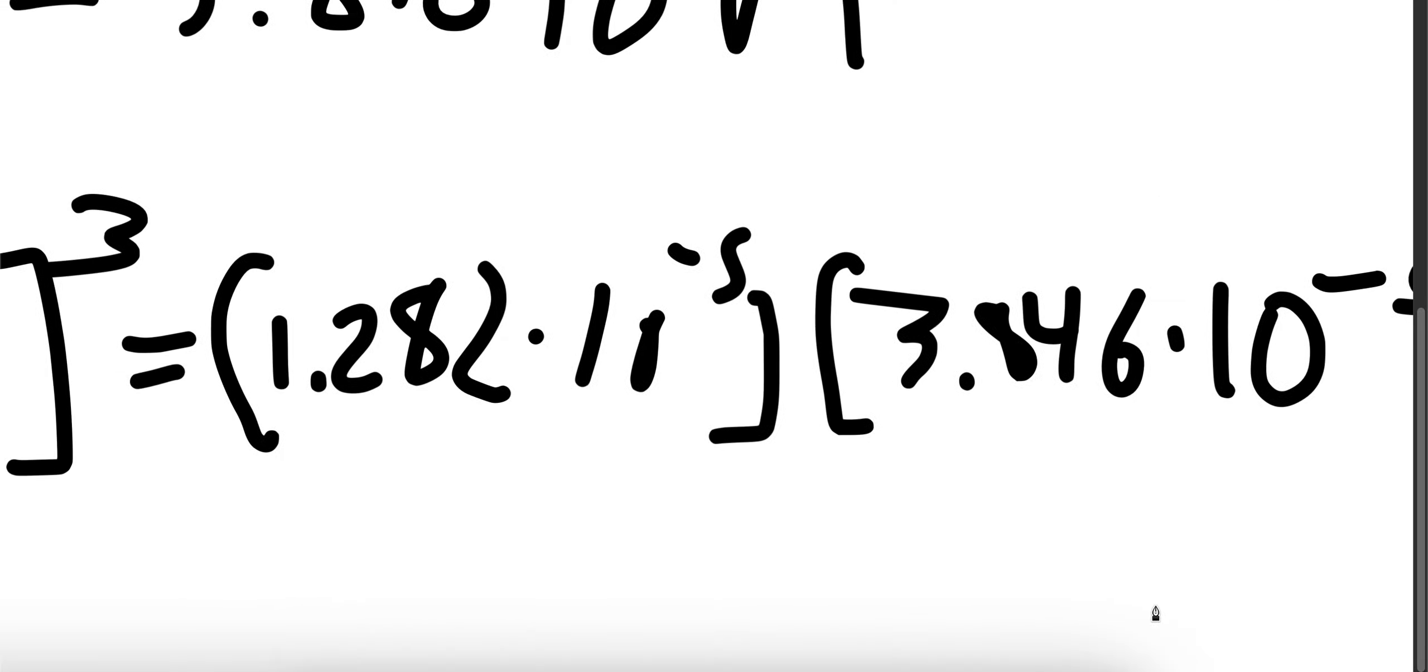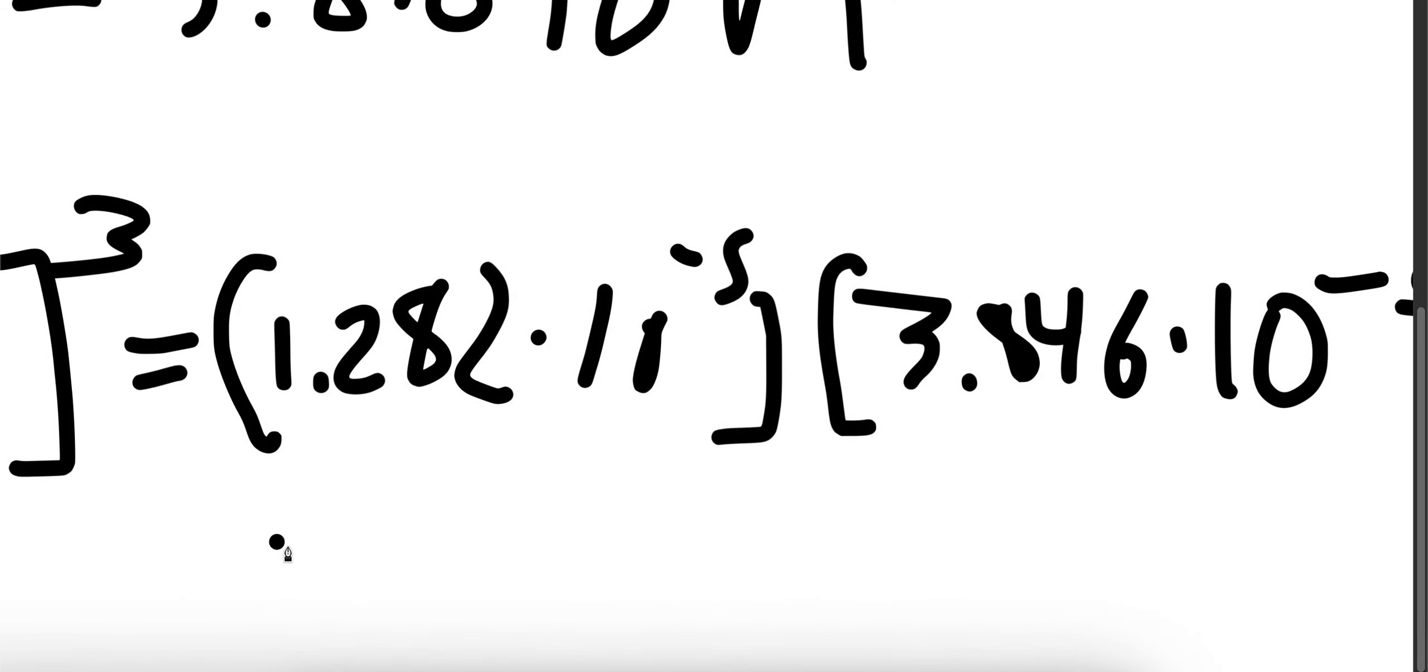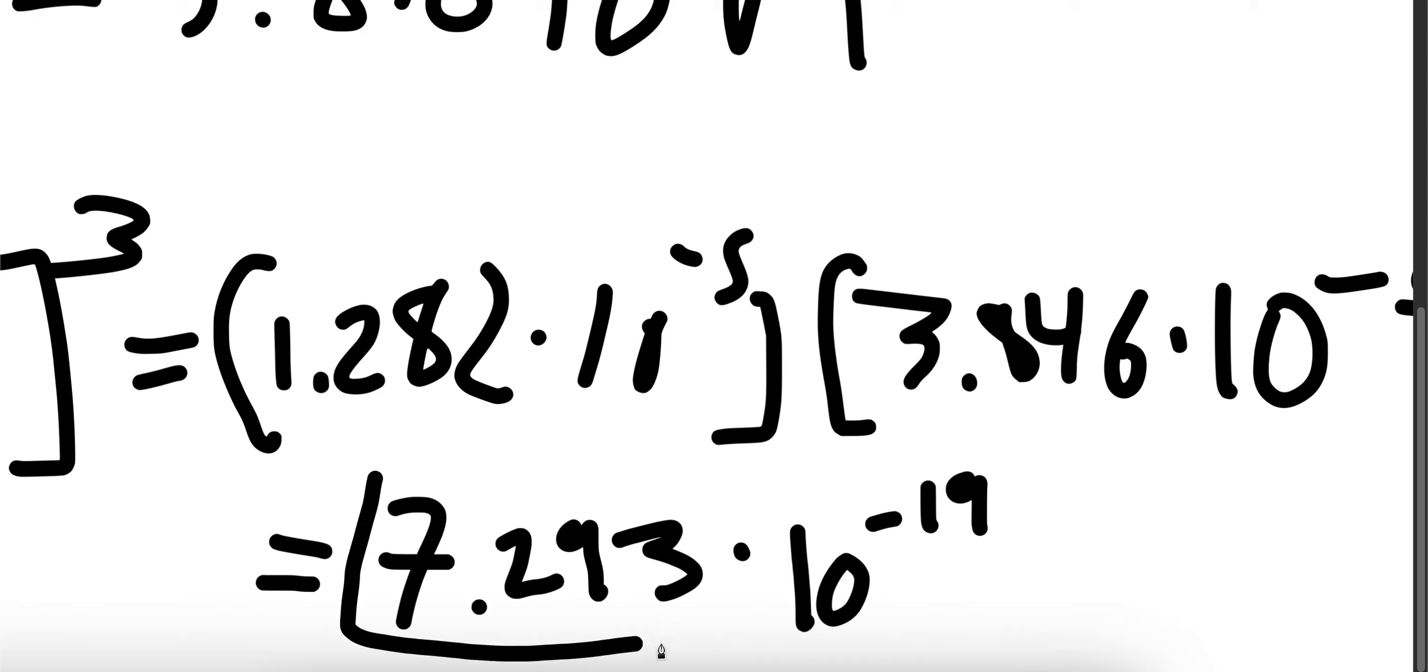Putting this into our calculator, our final answer should be 7.293 times 10 to the negative 19. And remember that Ksp is a constant value, so you aren't supposed to have any units with Ksp.